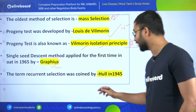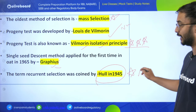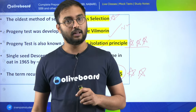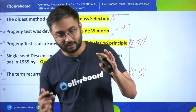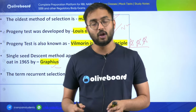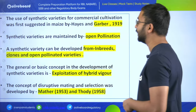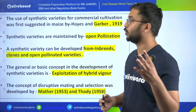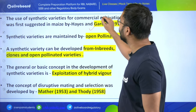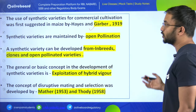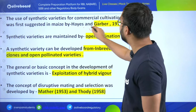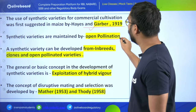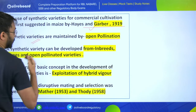The term recurrent selection was coined by Hull in 1945 - very important. Use of synthetic varieties for commercial cultivation was first suggested in maize by Hayes and Garber in 1919. Synthetic varieties are maintained by open pollination. Synthetic varieties can be developed from inbreeds, clones, and open pollinated varieties.